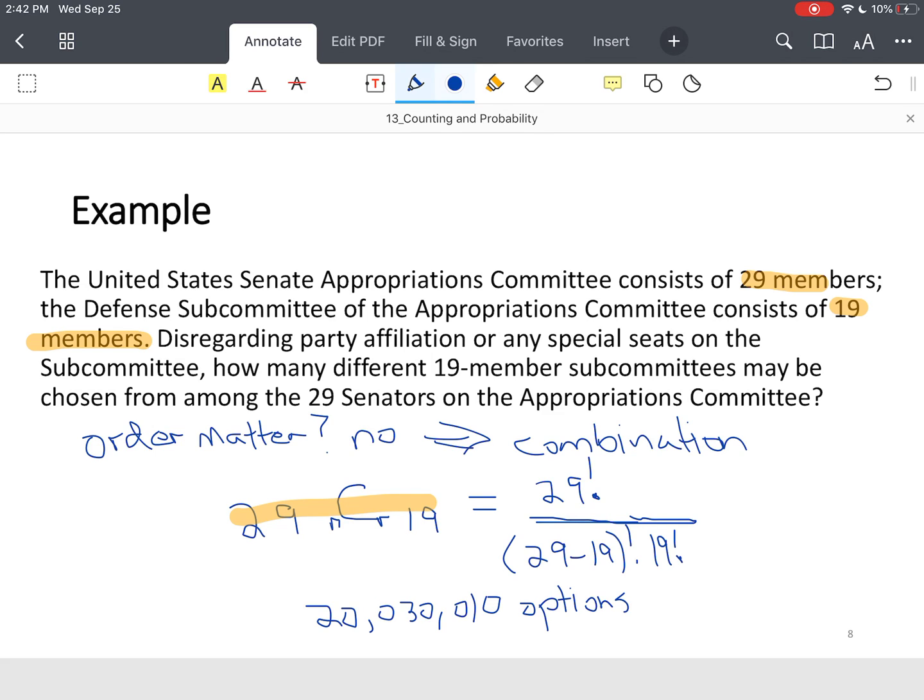So that's how you use a combination and a permutation. But the key is, if they said arrangement matter, you would just change that nCr to an nPr.